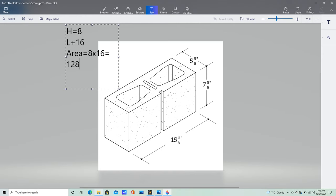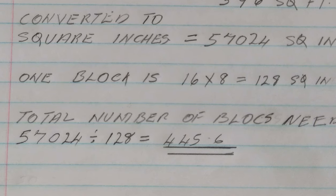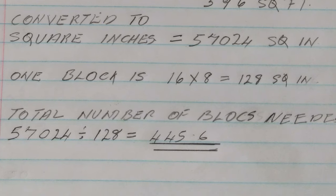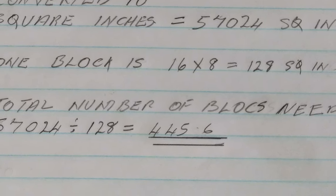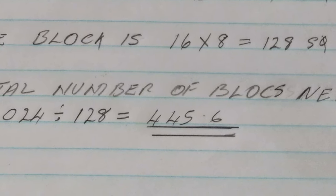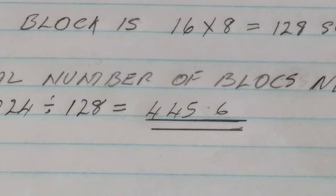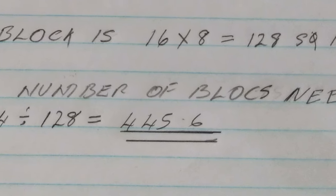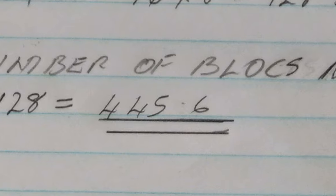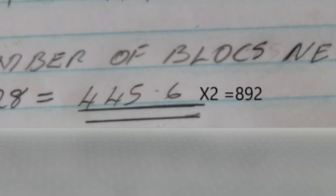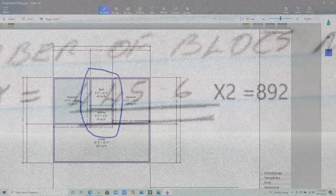Because each block is 16 by 8, you get 128 square inches per block. To get the total number of blocks needed for that one room, divide 57,024 square inches by 128 square inches. You will get 445.6 — that is the total number of blocks needed for one bedroom. Since you need two rooms, simply multiply that number by 2.